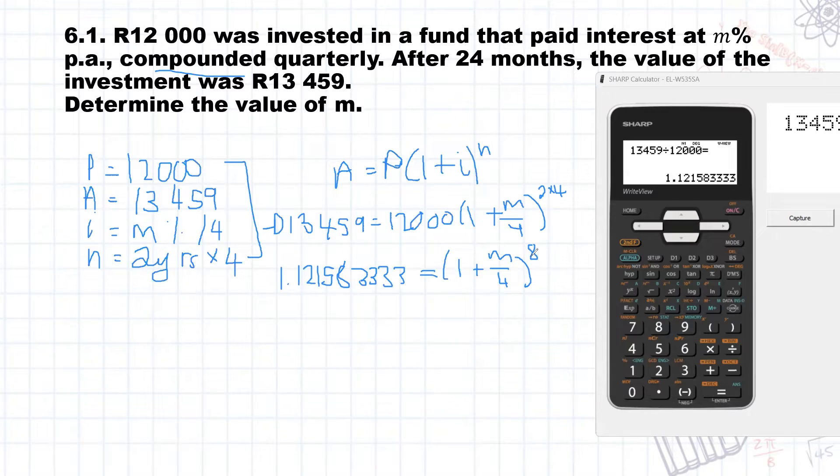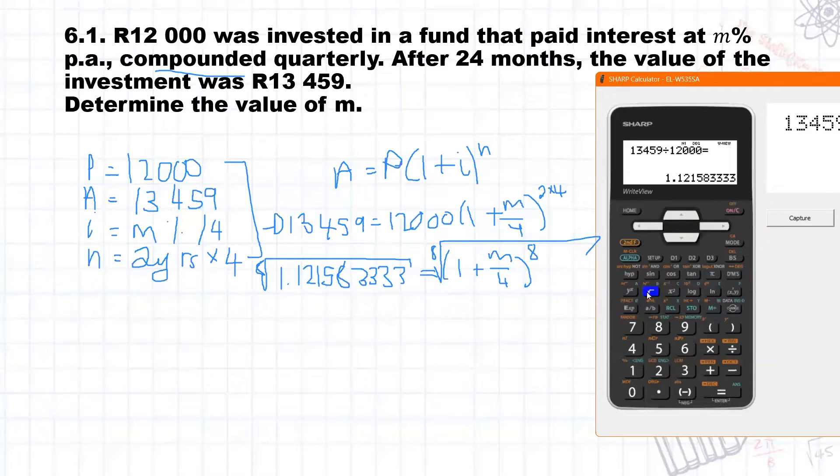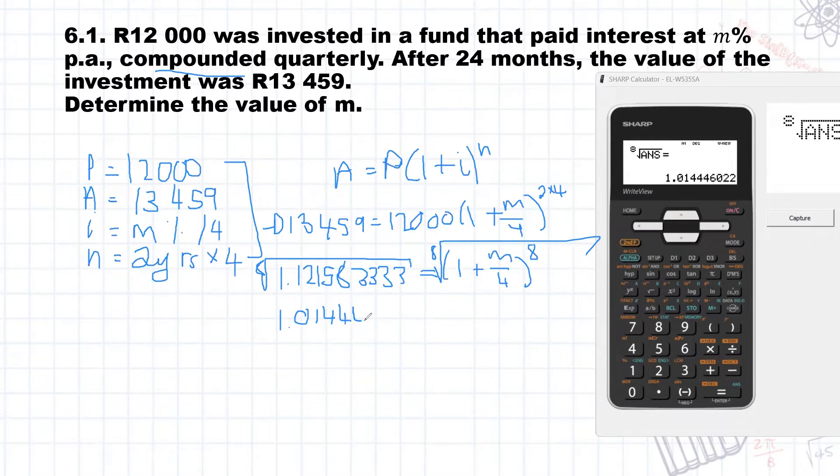Now the next thing to get M by itself is to get rid of this root. We're going to take the eighth root on our calculator on both sides. To do that on the calculator, what we'll do is say eight, second function and your exponent button, and you'll see that makes eight a root. And then instead of having to type in this number, we're just going to press alpha and answer. What it does is just takes the previous answer and substitutes it in for you. So here our answer now is 1.014446022 equals one plus M over four.